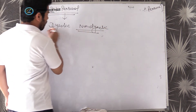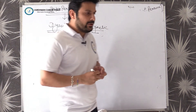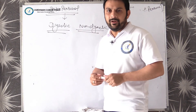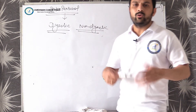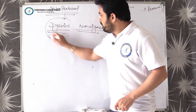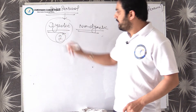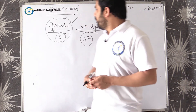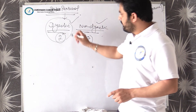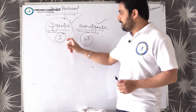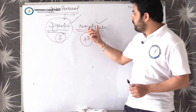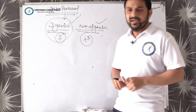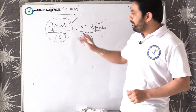Some students have a confusion: when two persons are involved, they think it is interpersonal, but it is not necessary that only two persons are involved — there can be more than two persons. So remember: when exactly two persons are involved, it is dyadic. When more than two persons are involved, it is non-dyadic. Both fall under interpersonal communication.